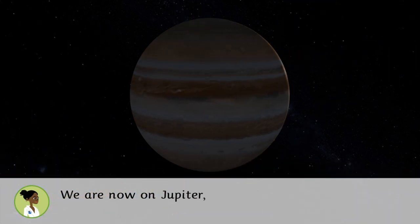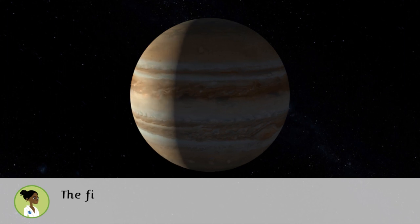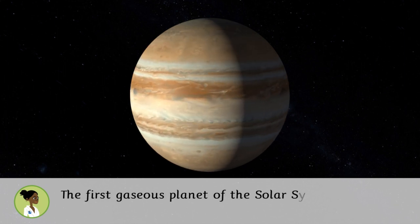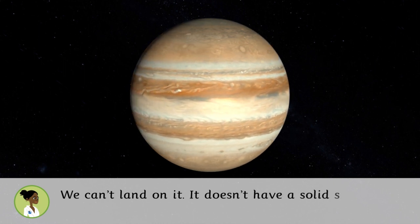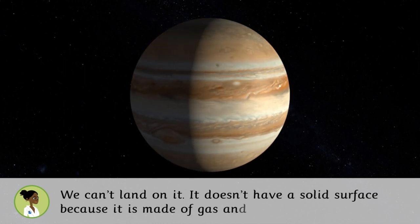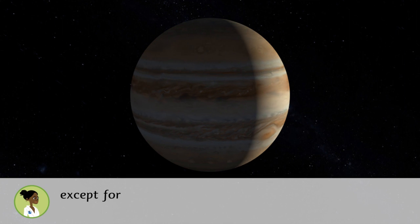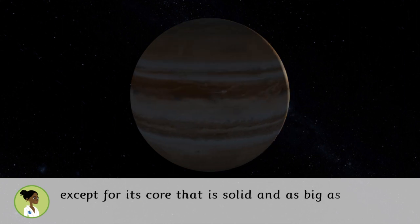We are now on Jupiter, the giant planet. The first gaseous planet of the solar system. We can't land on it. It doesn't have a solid surface because it is made of gas and liquids. Except for its core, that is solid and is as big as the Earth.